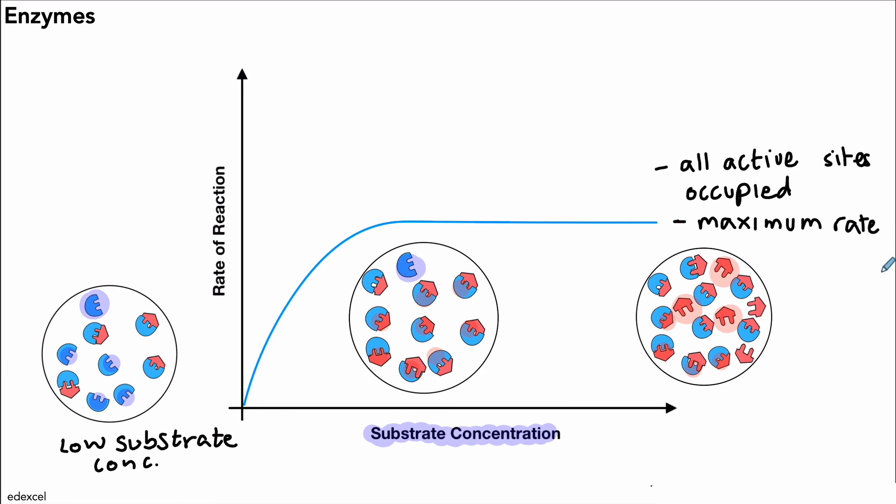And that's because all of the active sites are occupied for a high substrate concentration. Important to note that the enzyme concentration was kept the same throughout in this example. So if we have the enzyme concentration that's the same and we increase the substrate concentration, this is the pattern we get. And these diagrams explain the reason why.